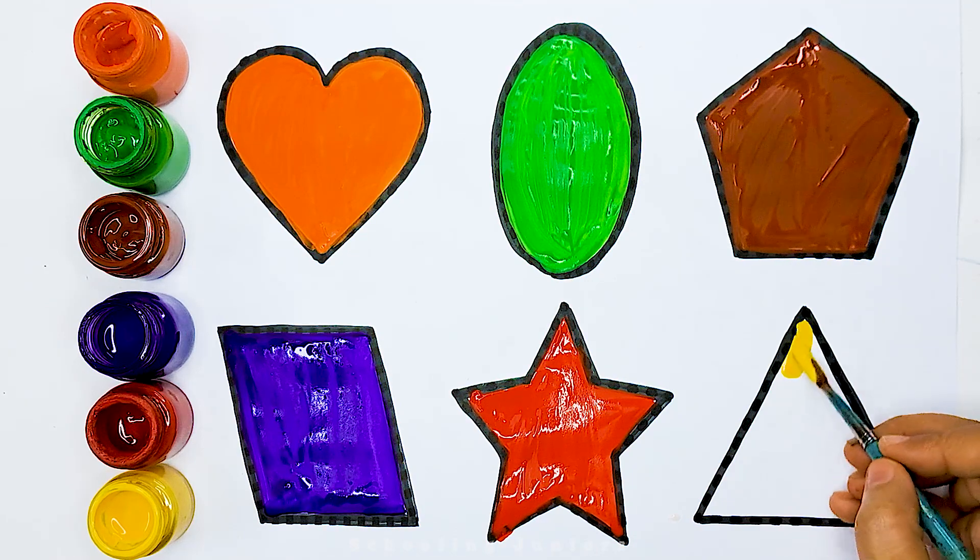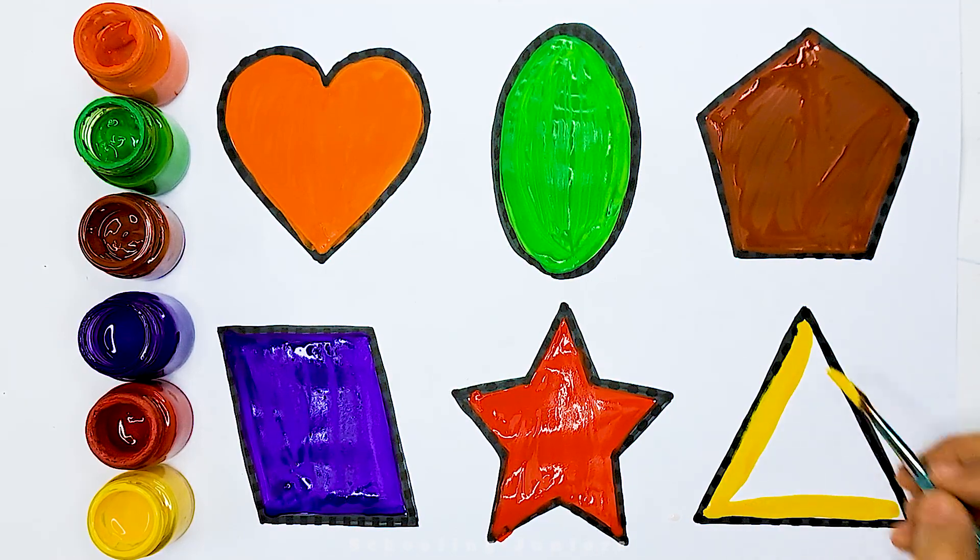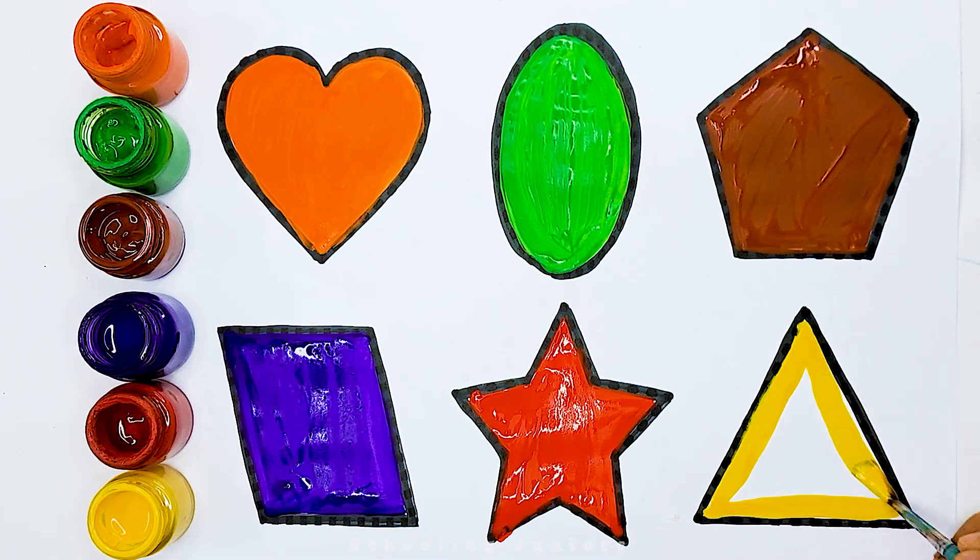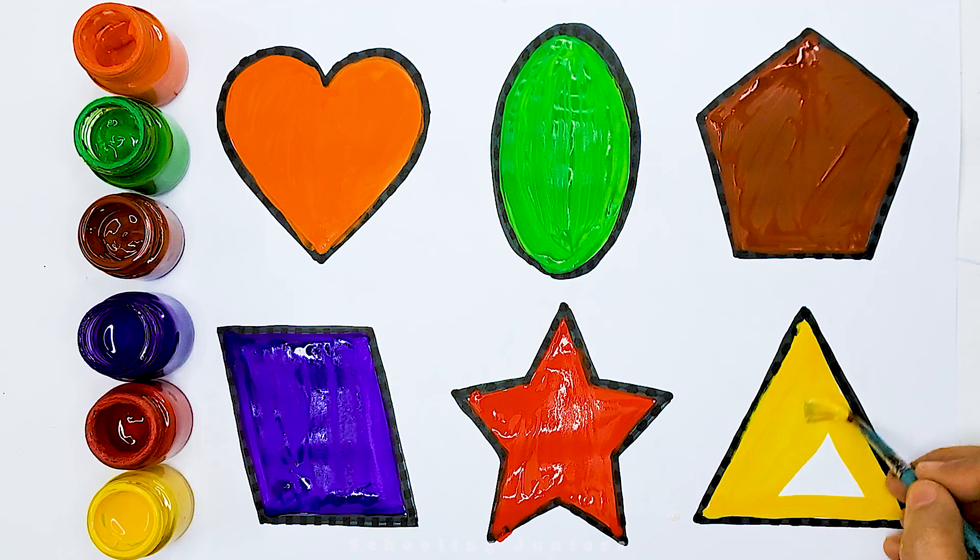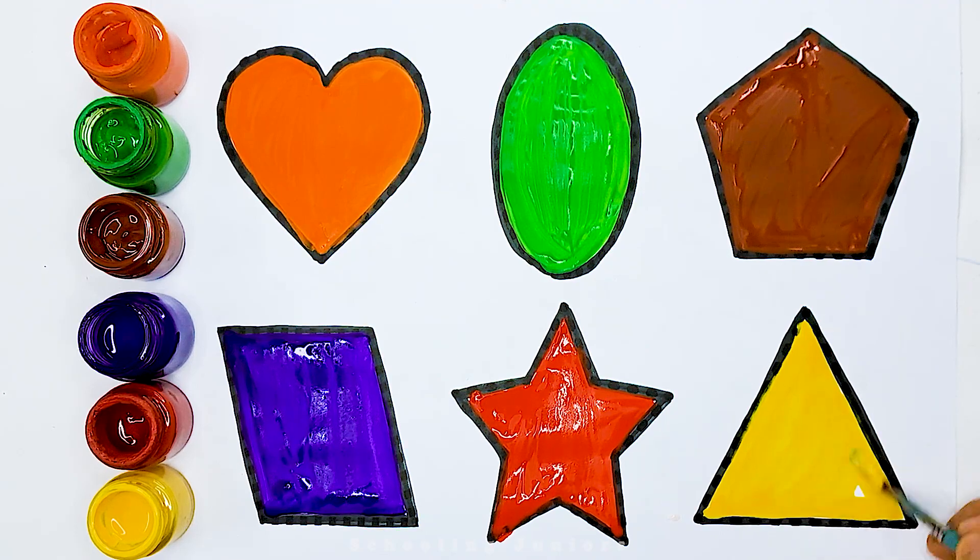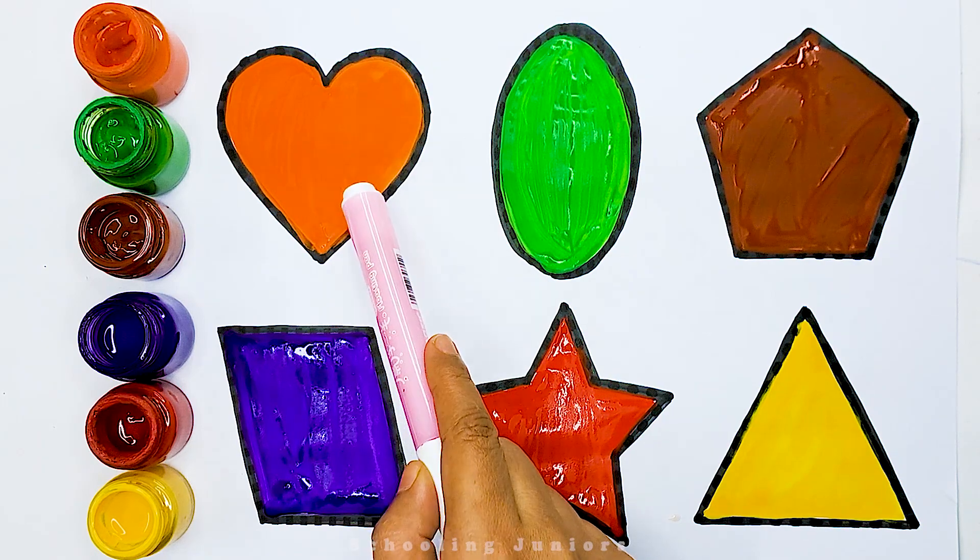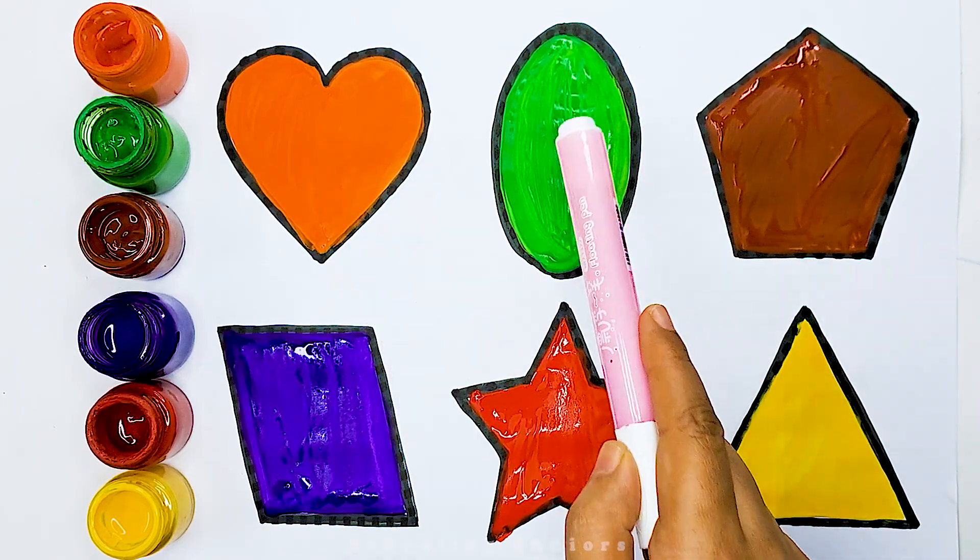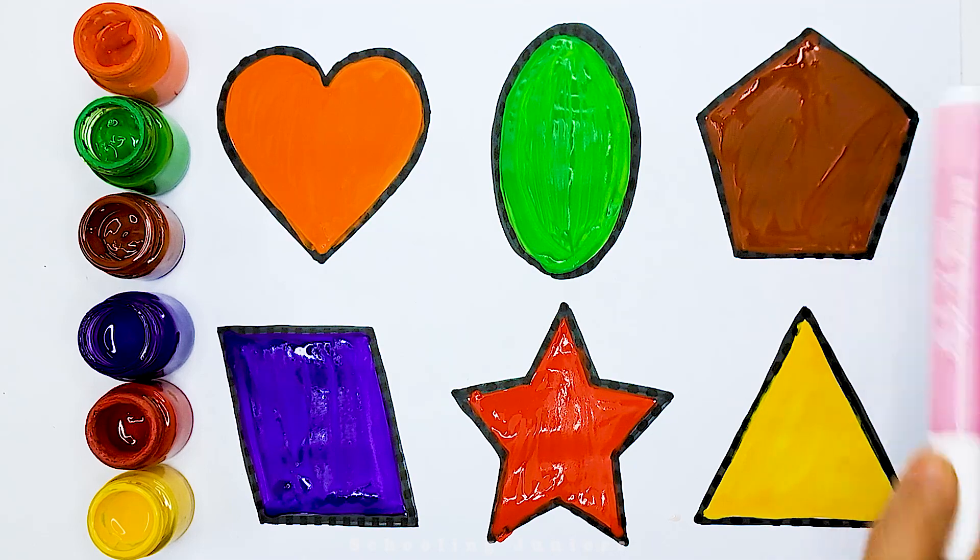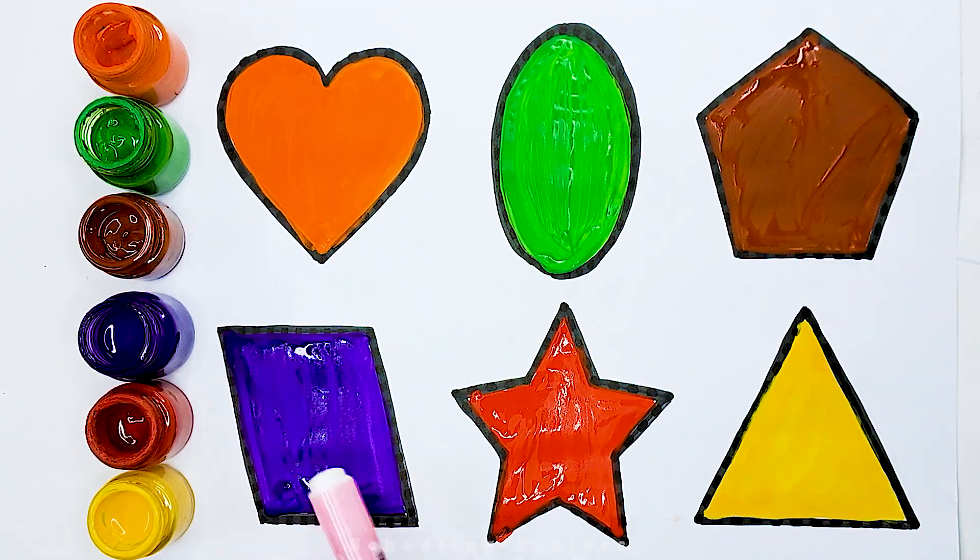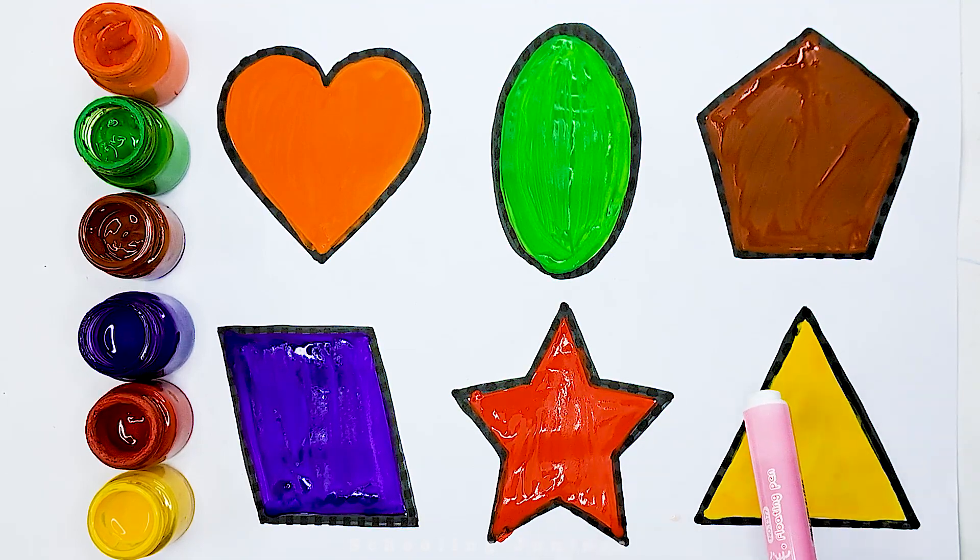Yellow color triangle. Orange color heart, green color oval, brown color pentagon, purple color parallelogram, red color star, yellow color triangle.